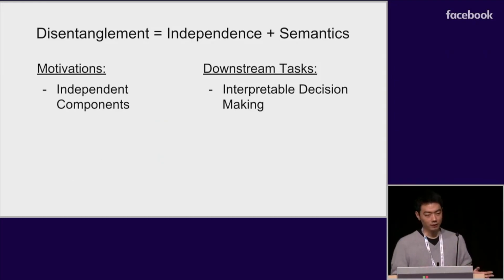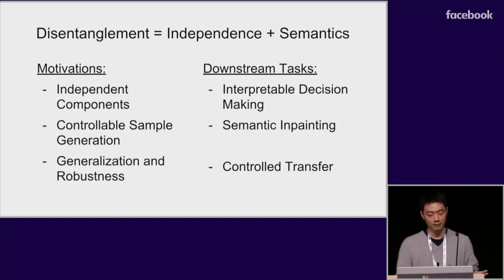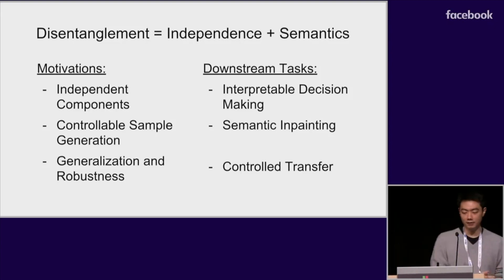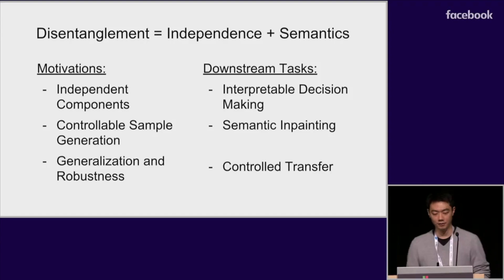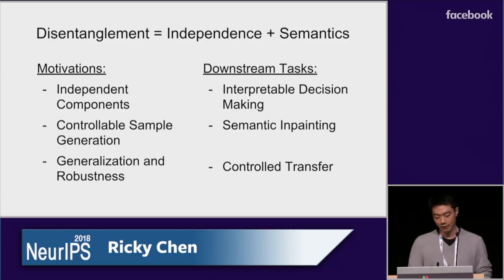The goal of this paper is to be able to learn such a representation in a completely unsupervised fashion. This line of work touches upon enforcing independence in a simple manner and has potential applications such as interpretable decision-making when such representations are used in end-to-end systems and generation of samples with controllable semantics and transfer learning.